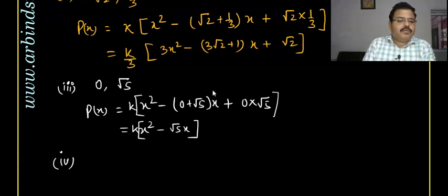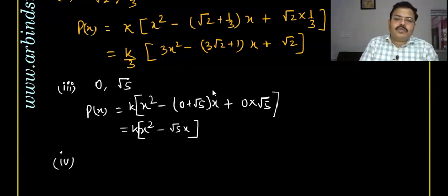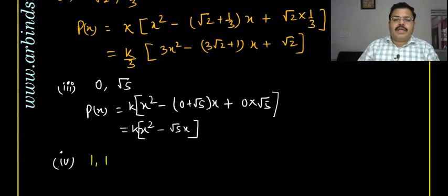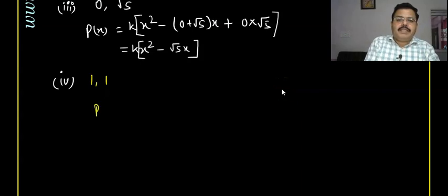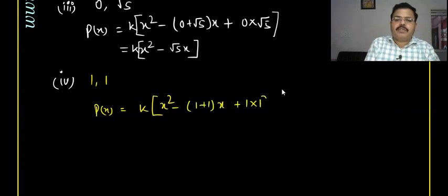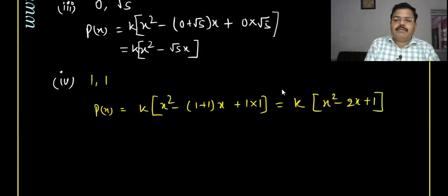The fourth question has zeros 1 and 1. Again, we write the same polynomial: p(x) = k times of (x² - (1+1)x + 1×1). We can write directly k times of (x² - 2x + 1), and that will be the answer.